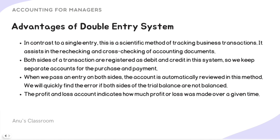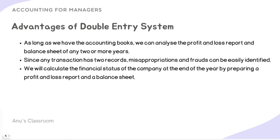The system assists in rechecking and cross-checking accounting documents. We have separate accounts for purchases as well as payments, with entries passed on both debit and credit sides. Errors are quickly found if both sides of the trial balance are not balanced. The profit and loss account can indicate profit or loss at any given time, making it easy to understand the financial position of the business. We can also compare profit and loss reports and balance sheets across two or more years, and identify misappropriations or frauds easily.